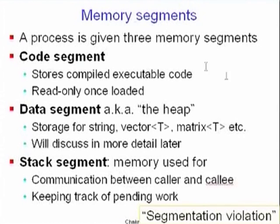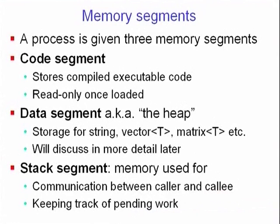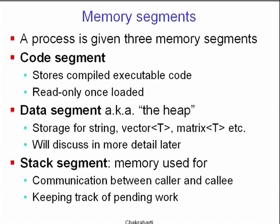Today we will mostly continue with discussing system details — how to split up your code into different files and how to compile them separately. And then we'll get to that interesting multiple loop problem. I'll just quickly retrace some of the things we talked about last time. Your process in the computer is allocated three memory segments.